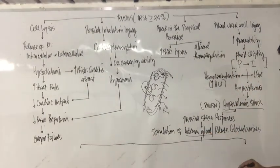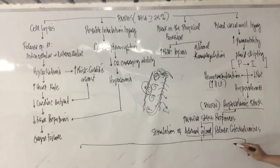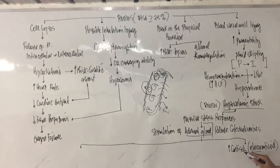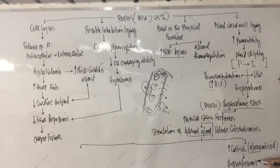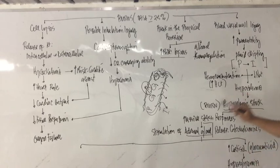When the adrenal gland is stimulated, it releases cortisol — also called glucocorticoid — because it has a direct effect on glucose. When cortisol rises, glucose rises, causing hyperglycemia. Glucose is a form of energy; the body needs more energy because of the stress, so this is a stress adaptation response.